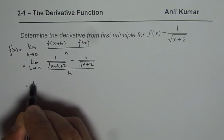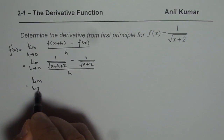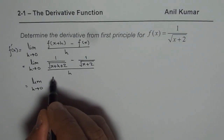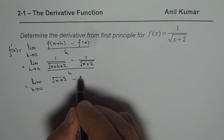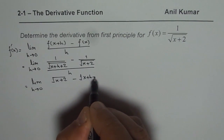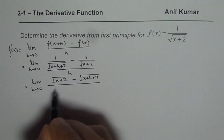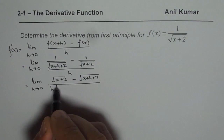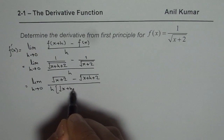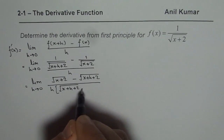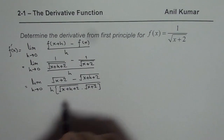At this stage we will cross multiply. So we get limit as h approaches 0 of square root of x plus 2 minus square root of x plus h plus 2, divided by h times the product of the two denominators, which is square root of x plus h plus 2 times square root of x plus 2.